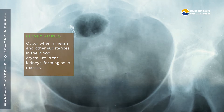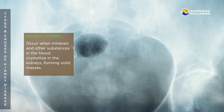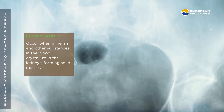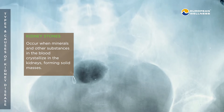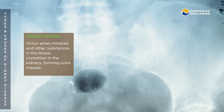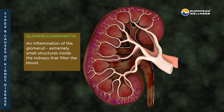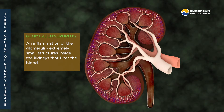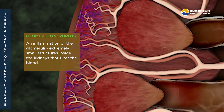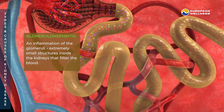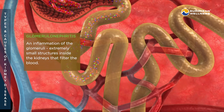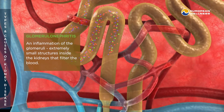Kidney stones occur when minerals and other substances in the blood crystallize in the kidneys, forming solid masses. Glomerulonephritis is an inflammation of the glomeruli, extremely small structures inside the kidneys that filter the blood.